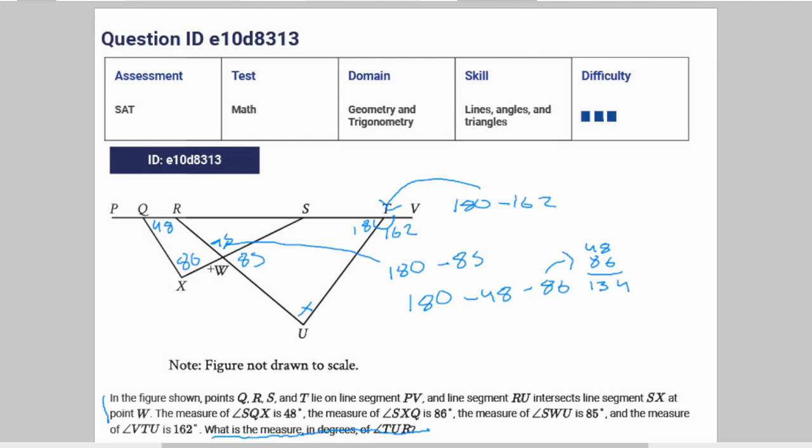Therefore, this angle is going to be equal to 180 minus 134, which is 46°. This angle equals 46°.